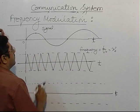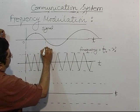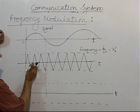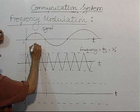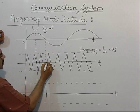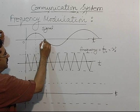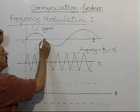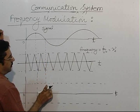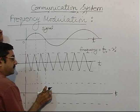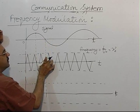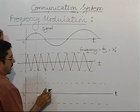What happens to the carrier wave? The frequency of the carrier wave increases to a maximum, then decreases to a minimum, and here it is zero. When the signal is zero, the normal carrier frequency ν₀ will be obtained in the output — the carrier wave's original frequency will be present.